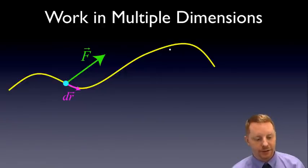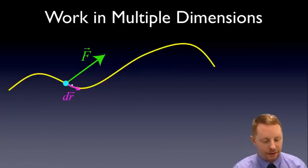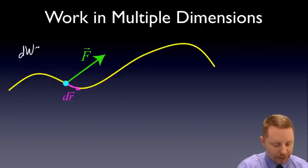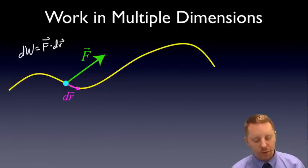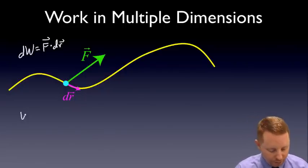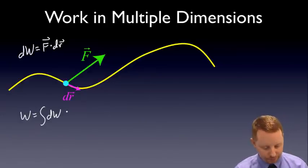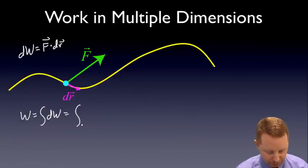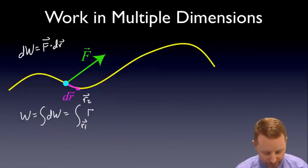We'll call this a line integral. The way we would get the work here is to sum up all the little f dot drs. So a little bit of work, a differential of work, is the force vector dotted with dr. So to get the total work done, work is going to be the integral of that differential of work. Or in this case,